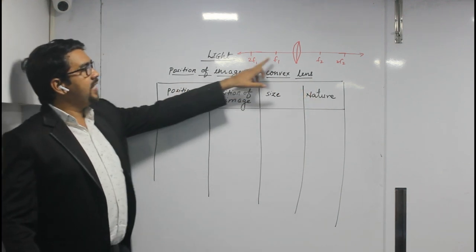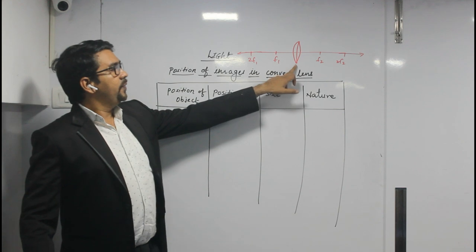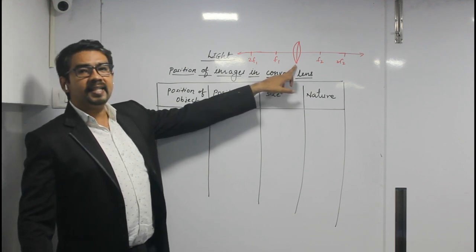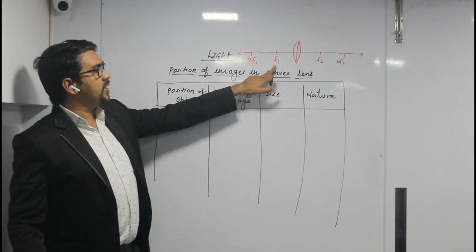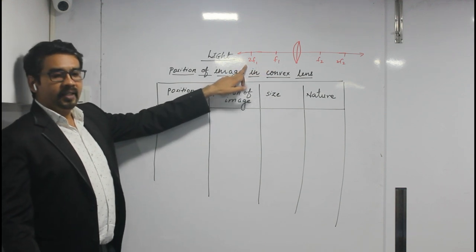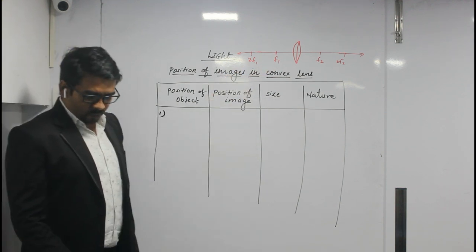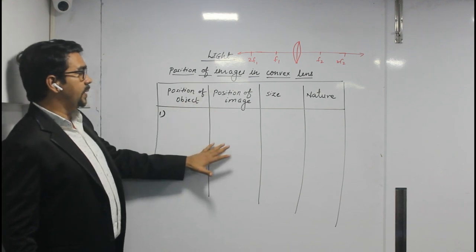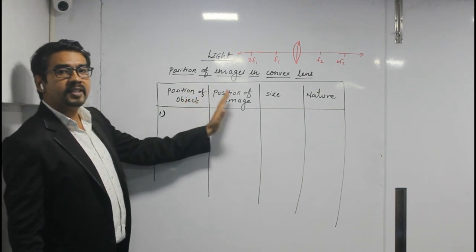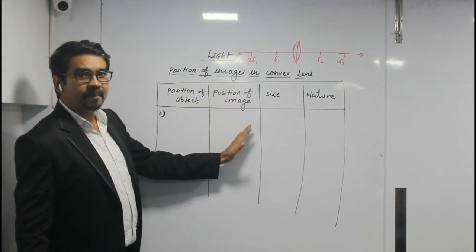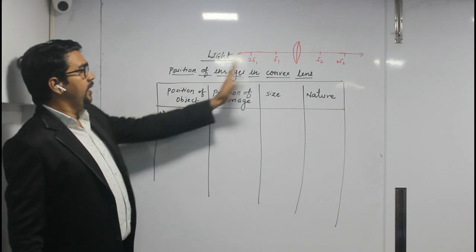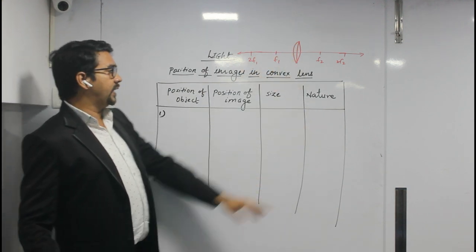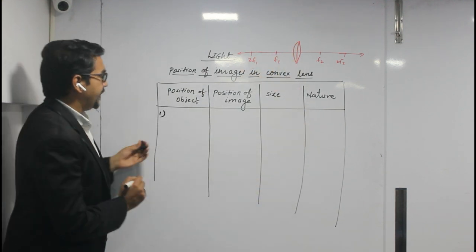Here you can see a lens, and there are different positions of the lenses. Before drawing the diagram, it's very important that we should know what is the position of the object and what is the position of the images. So first we place the object with reference to the different positions of the convex lens. Let's start.